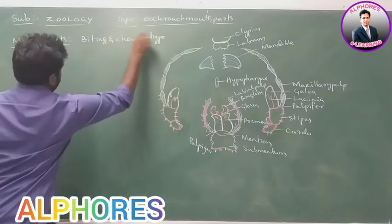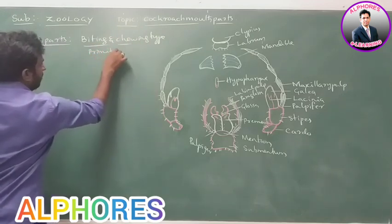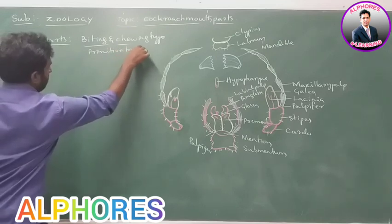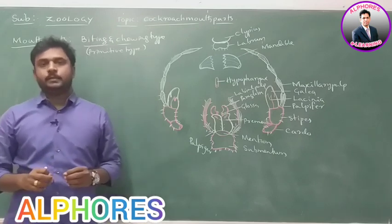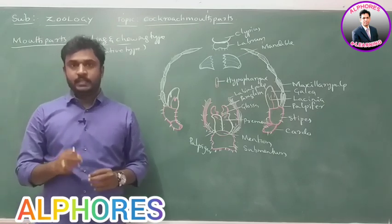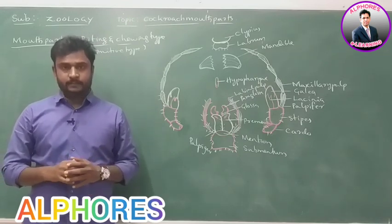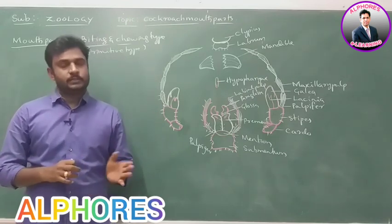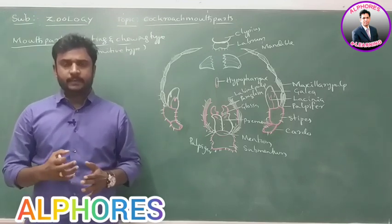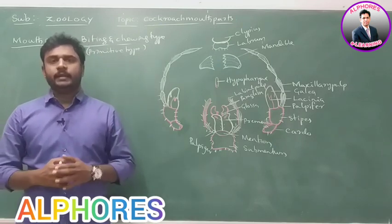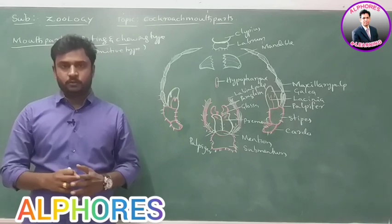Biting and chewing type of mouth parts, which are the most primitive type — the starting type of mouth parts. This type of mouth parts are normally present in the larvae of insects. But in the cockroach adult also, this type of mouth parts are present. This most primitive starting type of mouth parts is seen in Periplaneta americana.